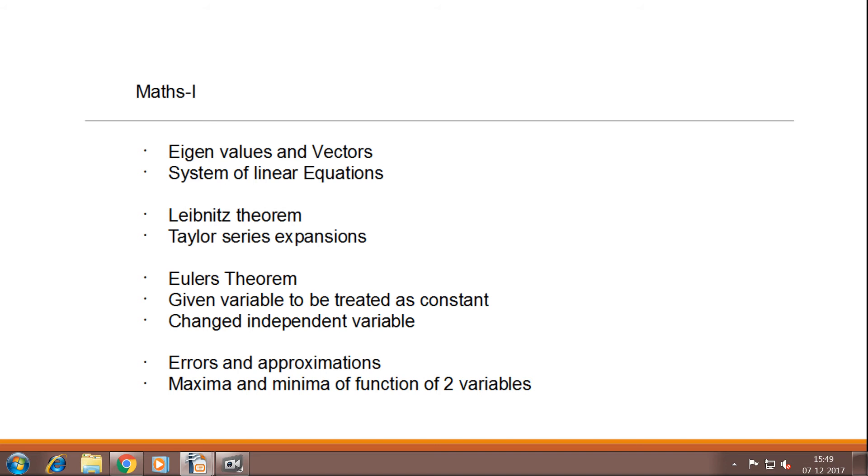Now unit number 5, that is very important again, it is having maximum weightage of 13 marks. So here you need to prepare Euler's theorem, given variable to be treated as a constant, and change independent variables. The last topic as unit number 6 contains a lot of topics. There is no any specific topic which 100% will be coming in exam, but still you need to prepare this topic which is very important and simple also, that is errors and approximation and maxima minima for two variables.